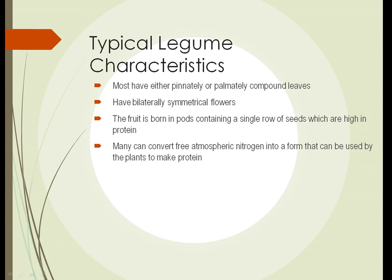The legumes have typical characteristics. If you see these characteristics in a plant you can be almost certain that you're looking at a legume. They have either pinnately or palmately compound leaves, most of them. They have bilaterally symmetrical flowers — we'll take a look at that in a minute. The fruit of a legume is borne in pods and the pods contain a single row of seeds. The seeds happen to be high in protein, and many legumes have the ability to convert free atmospheric nitrogen into a form that can be used by plants to make proteins. We'll also take a closer look at that.